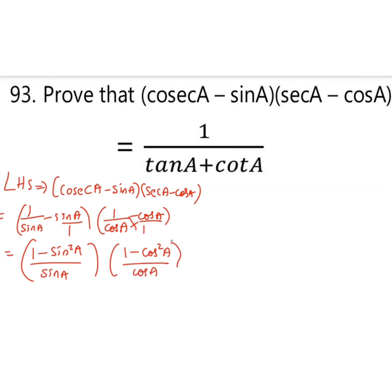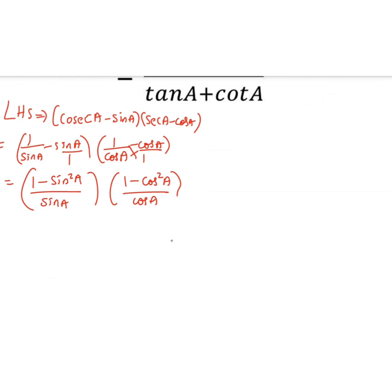Now we have 1 minus sin square A is cos square A divided by sin A, into 1 minus cos square A is sin square A divided by cos A.